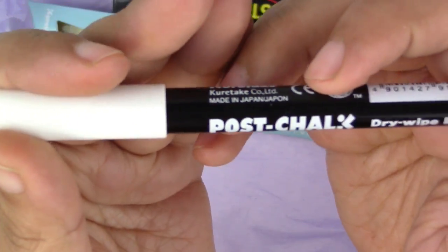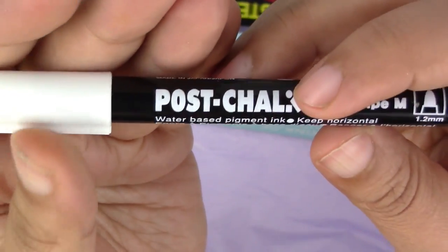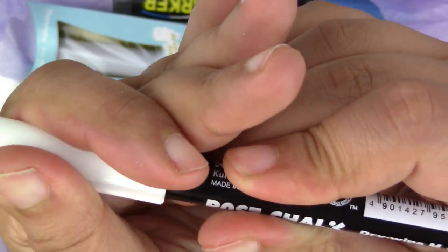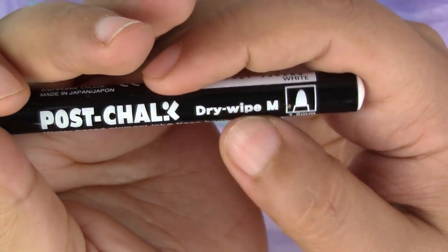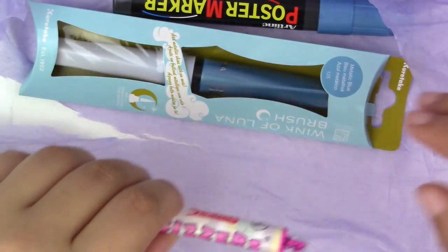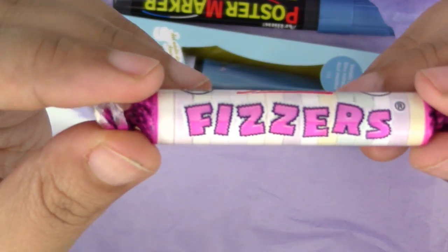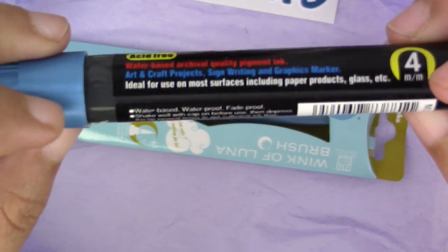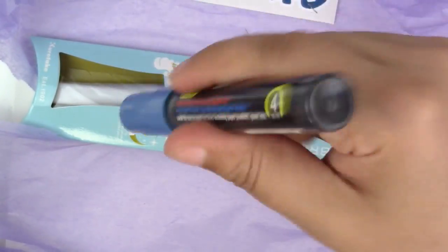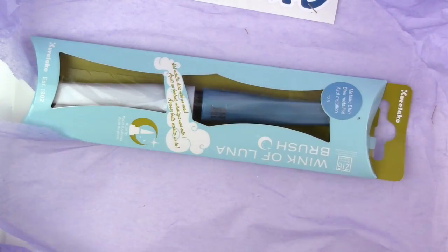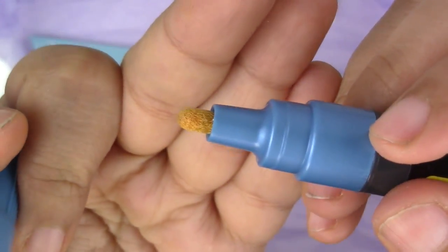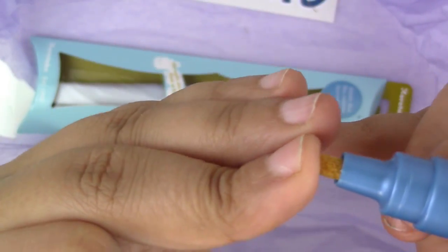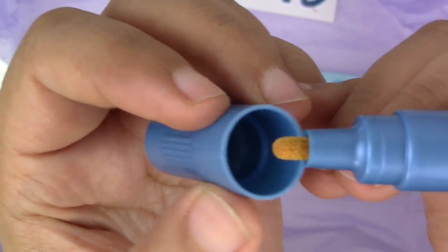We have the post chalk, the chalk marker which looks super interesting. I don't think I've ever tried that. It says dry wipe which means it should come off of your pieces. We have candies, Fizzers, I wonder if they fizz. We have the poster marker. I tried to put it to my nose to see if it does anything. Don't worry guys, I don't sniff markers.